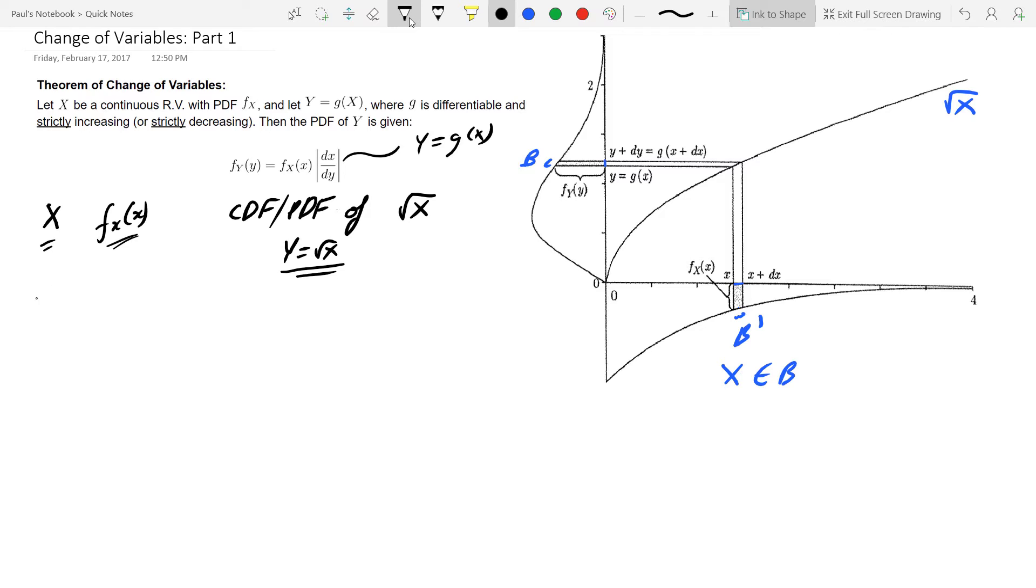And now, first off we want to understand what Y equals 4 means. So Y equals 4, that event is equivalent to the event of X equals 16 there. And so basically another way to think about this is that if I get Y equals 4, that would imply that my X equals 16.